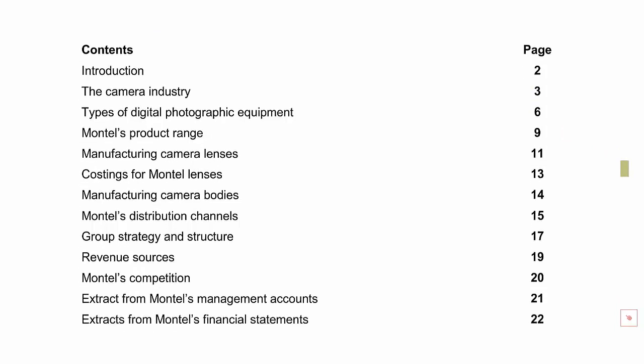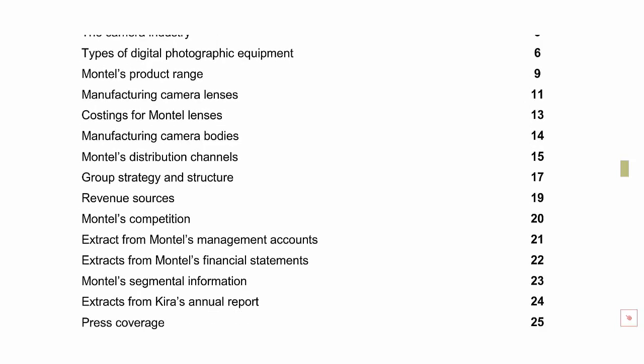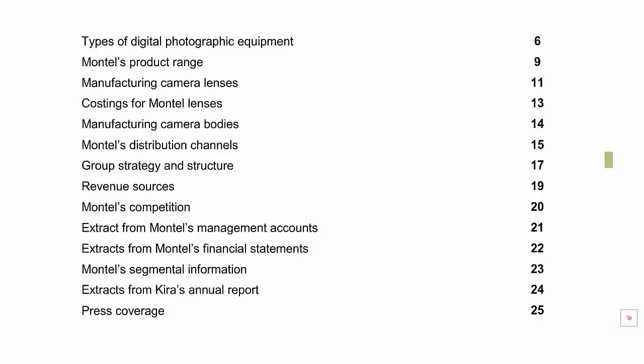The third video covers pages 15 to 20 and the final two pages including four articles at the end of the Pre-Scene. Pages 15 to 20 cover Montel's distribution channels, the group strategy and structure, revenue sources, and main competitors. In the fourth video, we'll deal exclusively with the financial statements, management accounts, and an extract of financial statements for one of Montel's main rivals, a company called Kira.